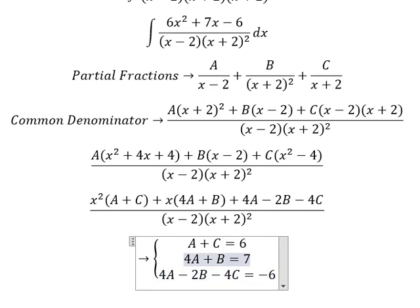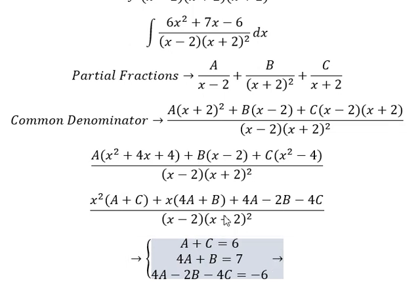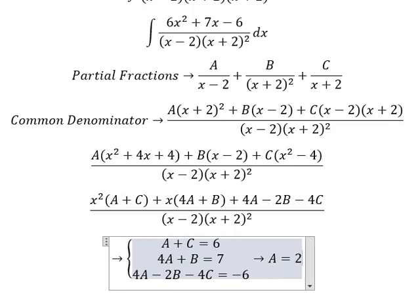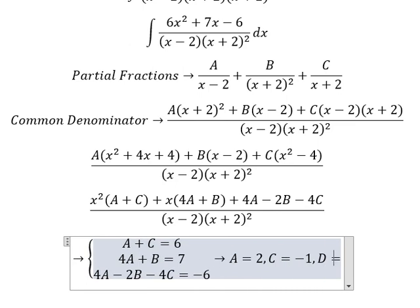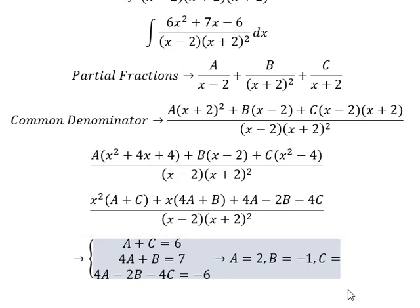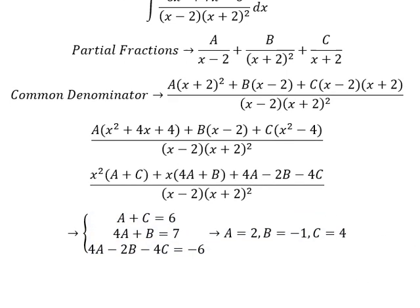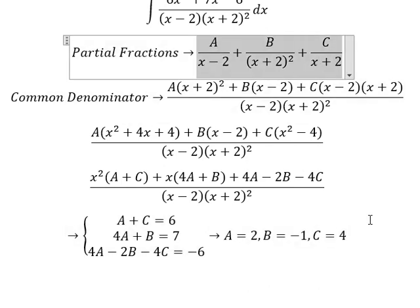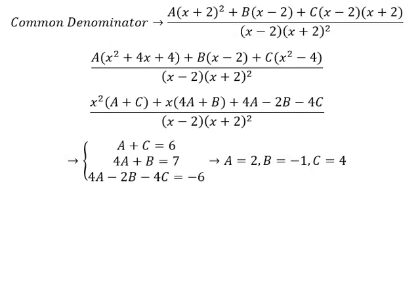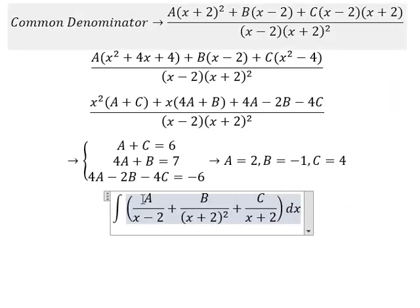Now we find the solution by solving the system of equations. We have A equal to 2, B equal to negative 1, and C equal to 4. So we put A, B, and C here.